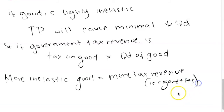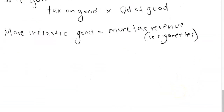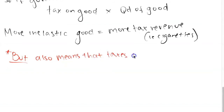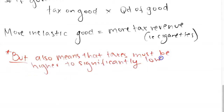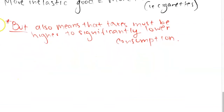It's also important for the government to consider how a tax will affect quantity demanded. Governments typically tax demerit goods like cigarettes to reduce consumption. Knowing that demand is PED inelastic helps the government set the tax high enough to sufficiently reduce quantity demanded. Conversely, if a government taxes a highly PED elastic good, consumption could fall so drastically that the entire market might collapse, causing vast unemployment — which is contrary to macroeconomic objectives.